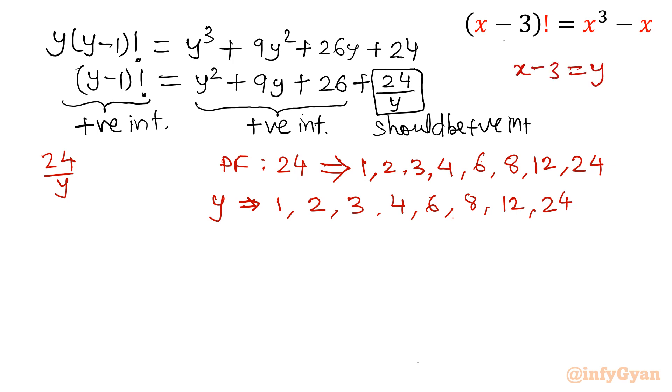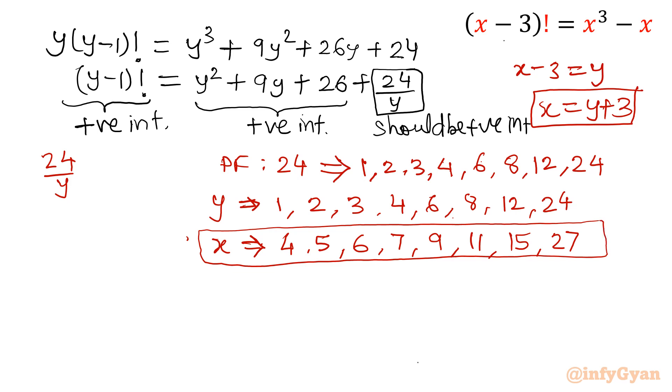Since y = x - 3, we need x = y + 3. So add 3 to all the possibilities of y: 4, 5, 6, 7, 9, 11, 15, and 27. These are the possible values of x.